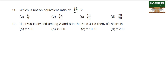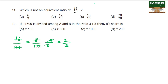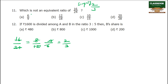Which is not an equivalent ratio of 16 by 24? Simplify: 16 by 24 — divide by 8 gives 2 by 3; divide by 12 gives 2 by 3. Simplified version is 2 by 3. Check: 32 by 6 simplifies to 2 by 3 — equivalent. 12 by 18: 4 by 6 equals 2 by 3 — equivalent. 10 by 15: correct equivalent.